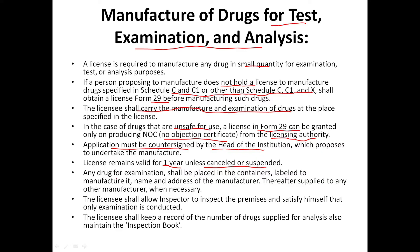If you want to examine any drug, you can label it with the manufacturer's name and address. The licensee must allow the inspector to inspect it. The inspector will be allowed to keep records. The licensee must maintain an inspection book. This is the manufacturing of drugs for test, examination, and analysis.